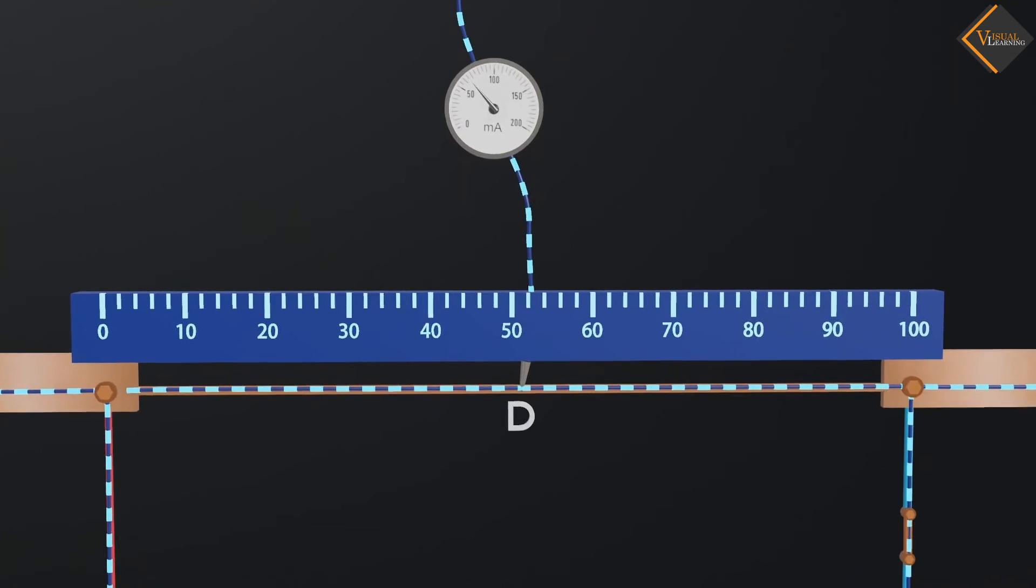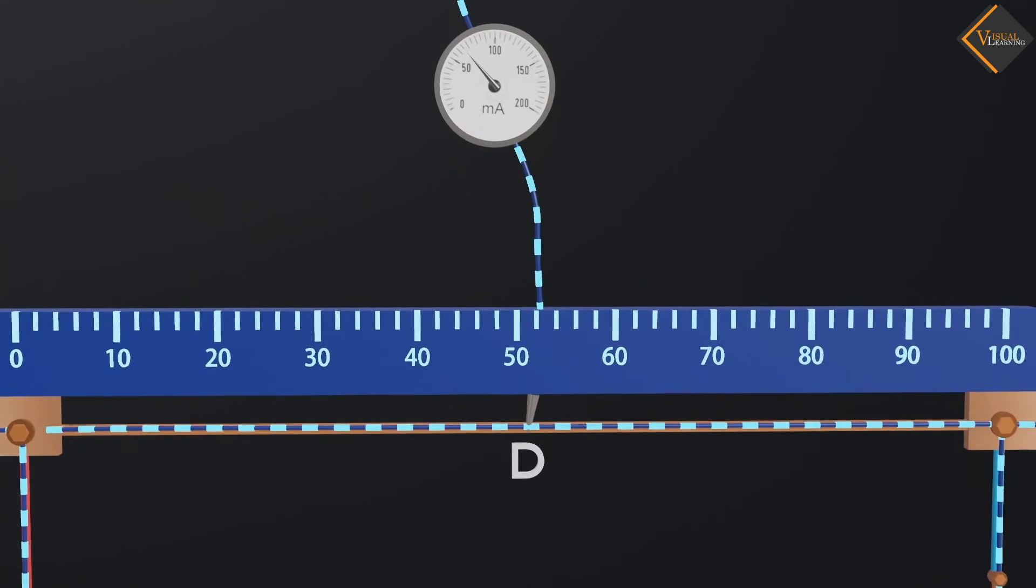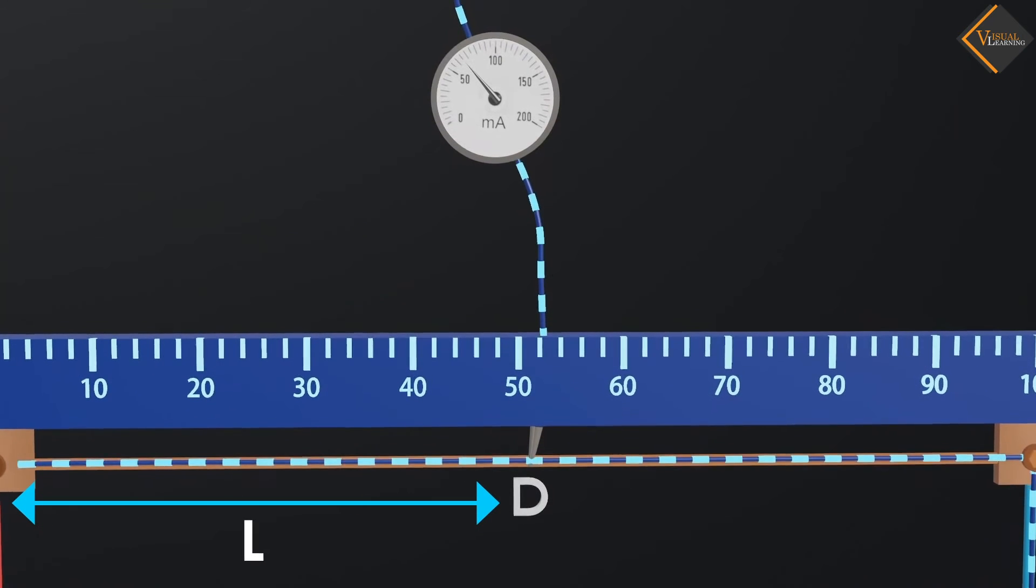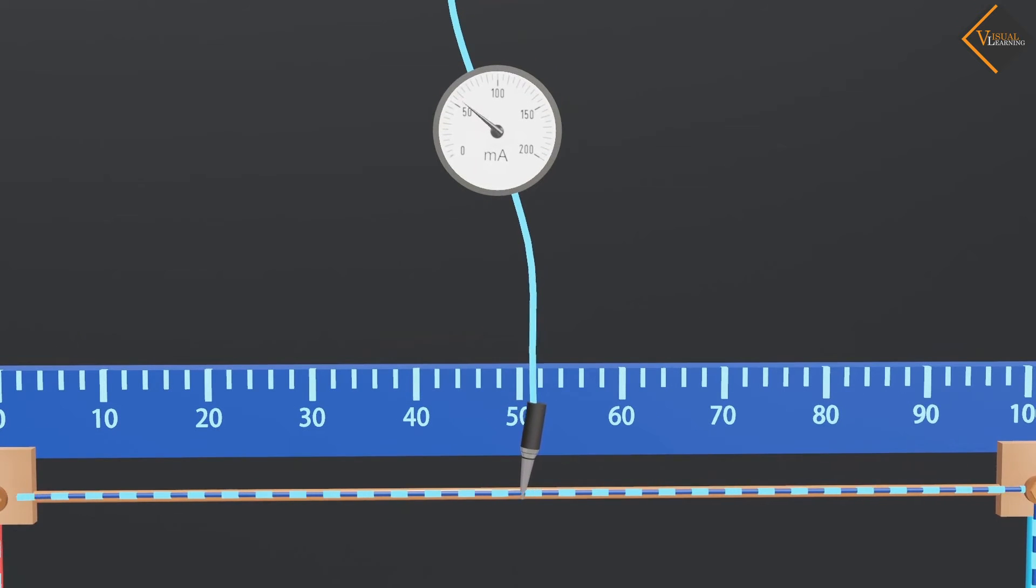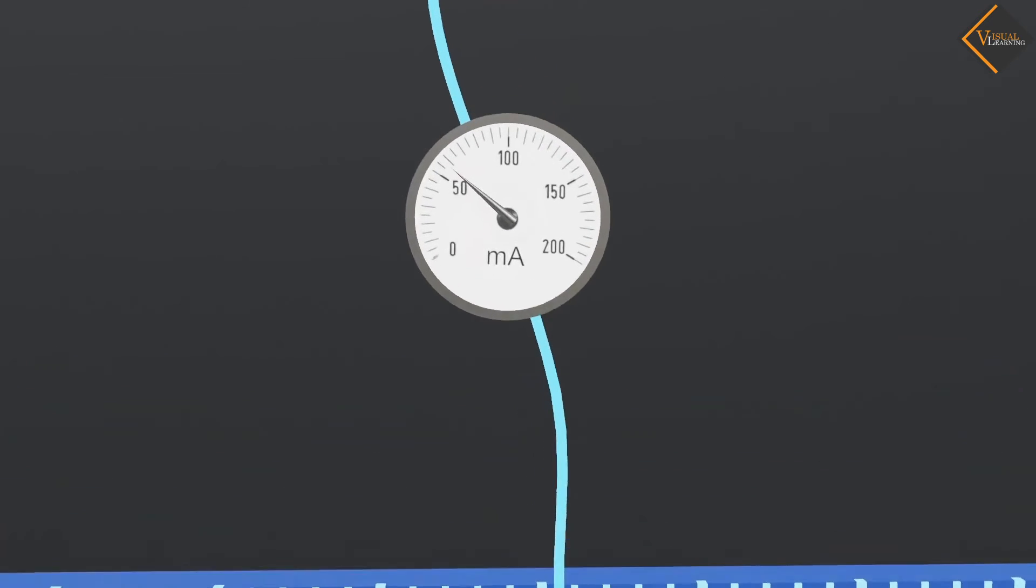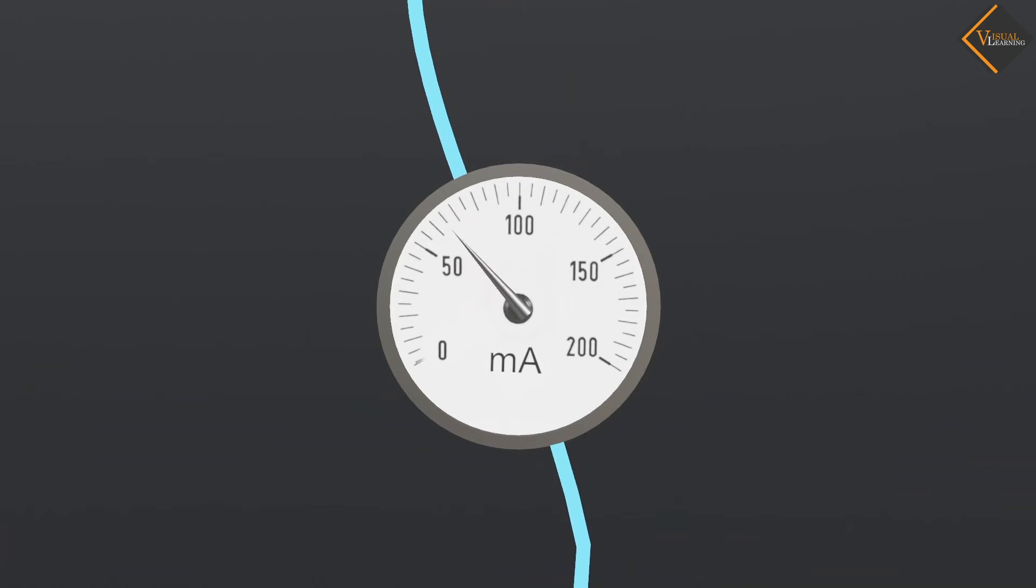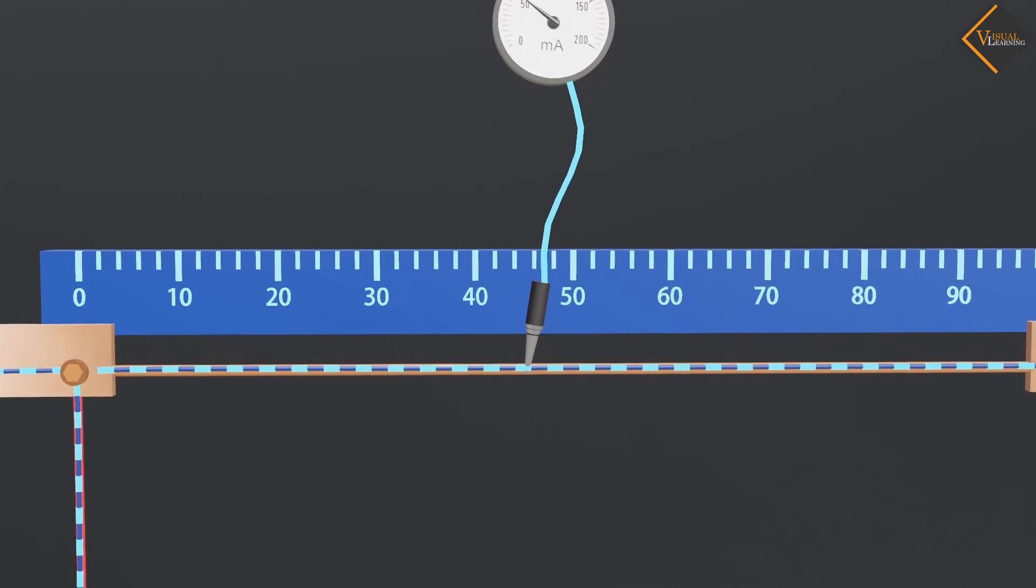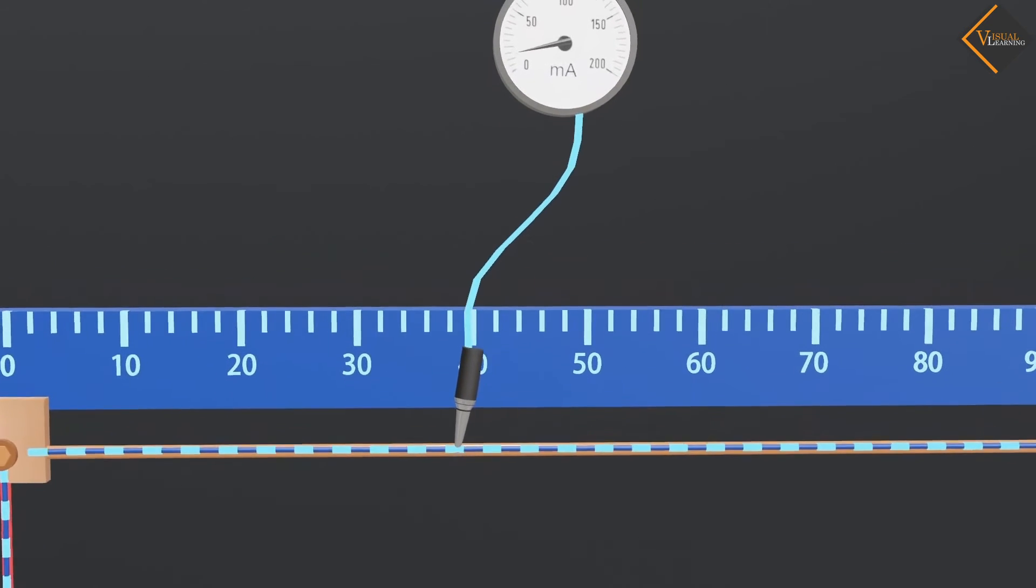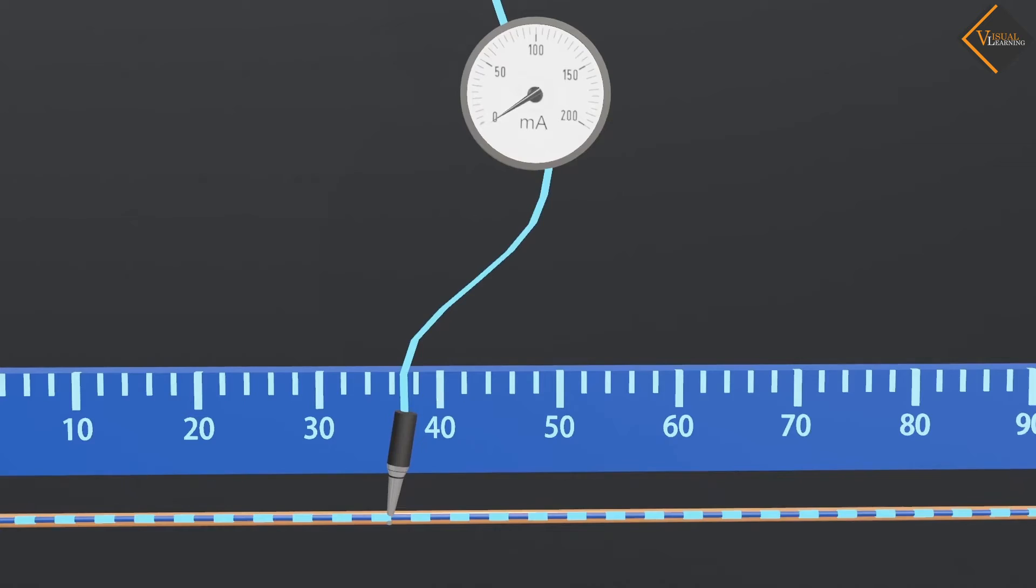Assume that we have connected the jack of the galvanometer to point D, and the length of the wire up to this point is noted. When we slide the jockey on the wire, we observe deflection in the galvanometer reading. We will slowly slide this jockey on the wire, and at the point where the galvanometer reading becomes 0, we will stop the jockey.